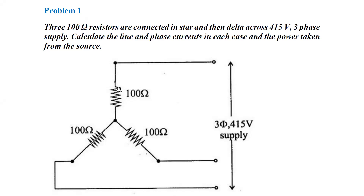First, draw the circuit. If the circuit is not given, only the question is given, so you can draw the star circuit by adding the resistance here and here. That is a star connection and the voltage across it is the 450 volt 3-phase supply.